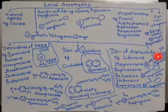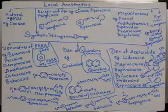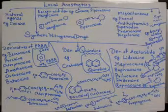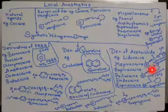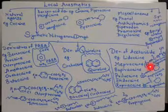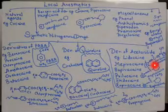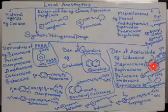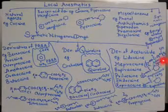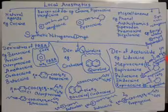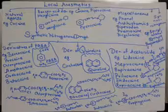Derivatives of acetanilide include lidocaine (also called lignocaine), mepivacaine, bupivacaine, prilocaine, etidocaine, and ropivacaine. To draw lidocaine: draw the aromatic ring with two CH3 groups (xylene-type), then NH first (not direct carbonyl), then C=O, then CH2-N(C2H5)2 — a tertiary amine with different pattern. Lidocaine equals lignocaine.